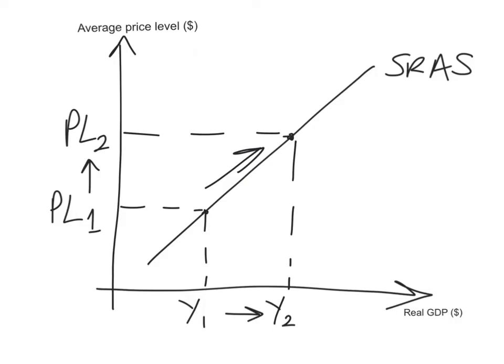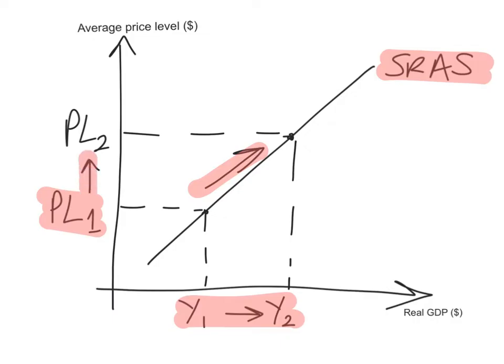Here's a more zoomed-in short run aggregate supply curve. You can see there's a positive relationship — as aggregate supply increases from Y1 to Y2, the average price level rises from PL1 to PL2. There's a positive relationship, and that's why it is upward sloping.